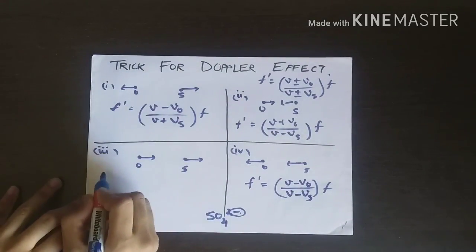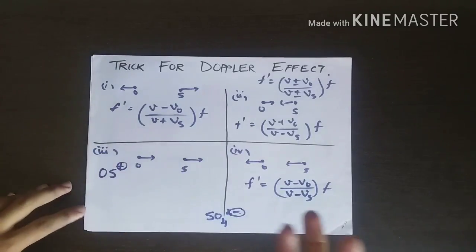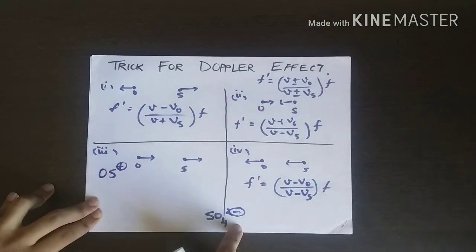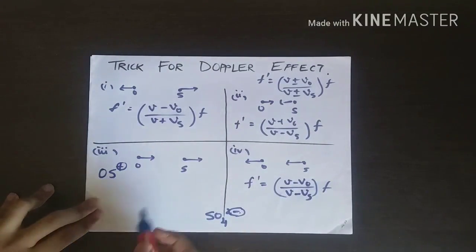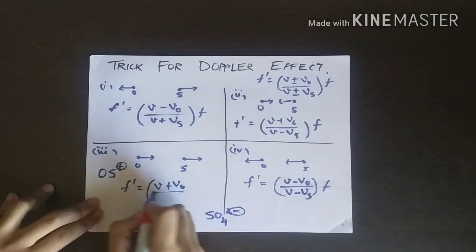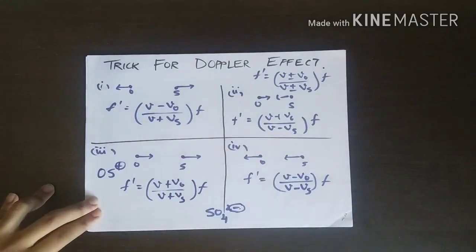You can easily remember sulfate ion because you've read chemistry. For this, the formula will be F' = (V + V₀)/(V + Vₛ) × F times the original frequency.